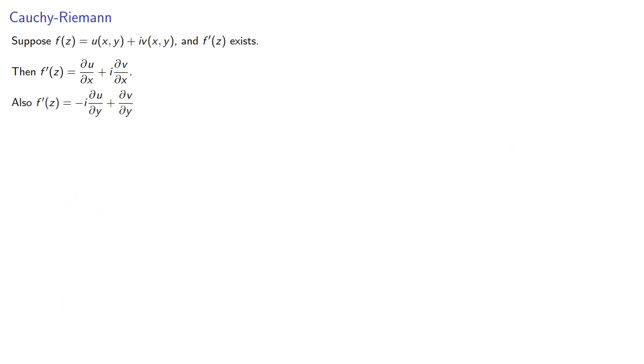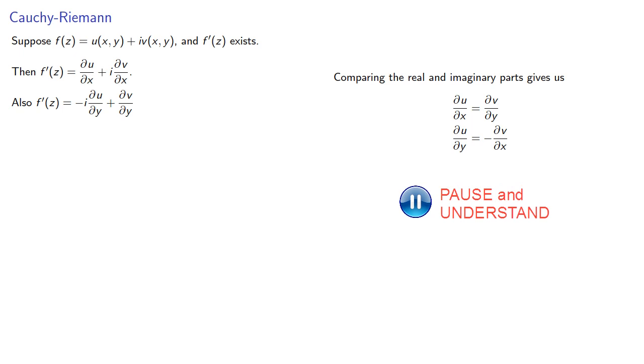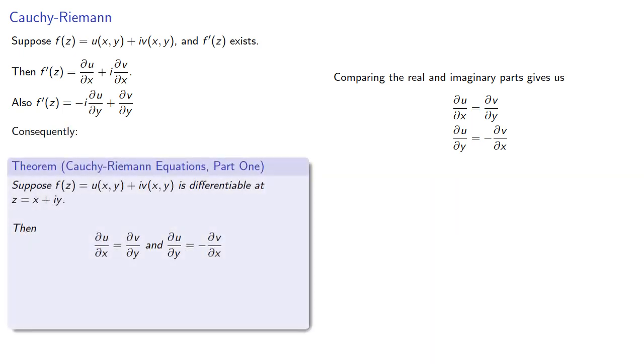This gives us two possible expressions for the derivative. Now they're supposed to be the same, so that means we can compare the real and imaginary parts. Consequently, if the derivative exists, we have to have an equality among the partial derivatives of the real and complex parts. These relationships between the derivatives are known as the Cauchy-Riemann equations.